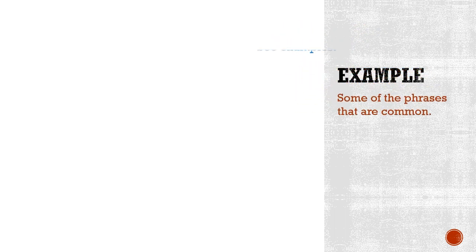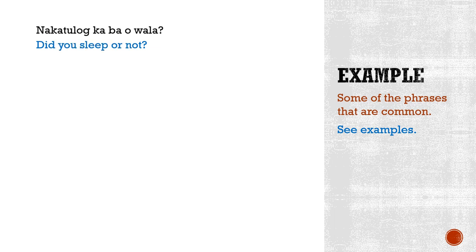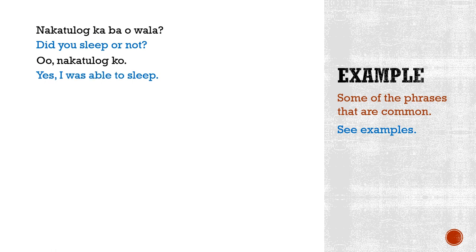Let's continue with more examples. The question is: Nakatulog ka ba o wala? Tulog is sleep. So: Did you sleep or not? Oo, nakatulog ko — Yes, I was able to sleep. Wala ko katulog — No, I wasn't able to sleep. Or: No, I didn't sleep.